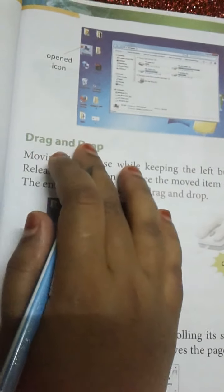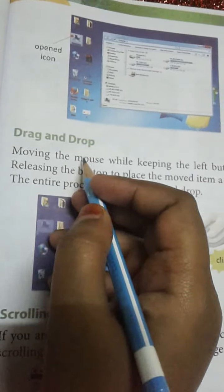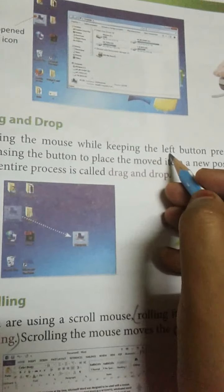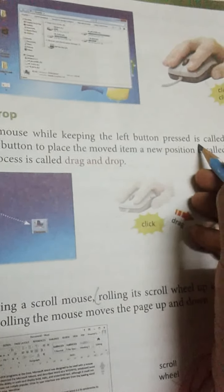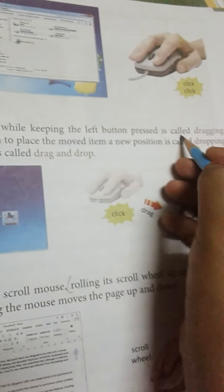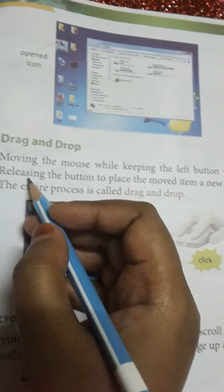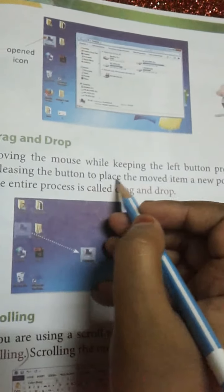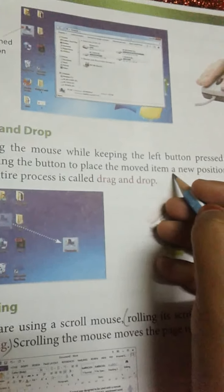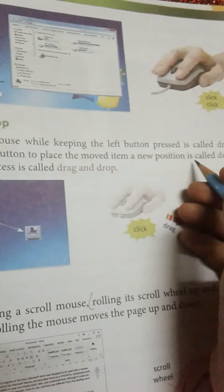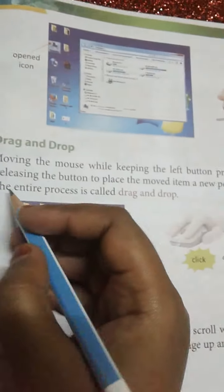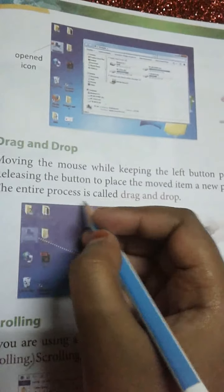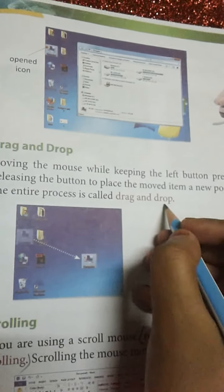Drag and Drop. Moving the mouse while keeping the left button pressed is called dragging. Releasing the button to place the item in a new position is called dropping. The entire process is called drag and drop.